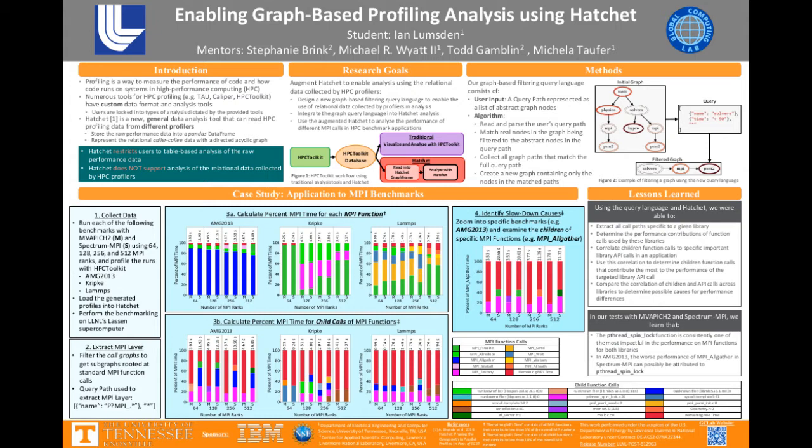It then returns a new graph containing copies of the nodes and edges captured by the filter. On the right, you can see a simple example of the query language in action. This query searches for all paths starting with a node named solvers, directly followed by a node with a time less than 50, followed by zero or more of any node. There was only one path in the original graph matching this query, so the return graph is simply this path.